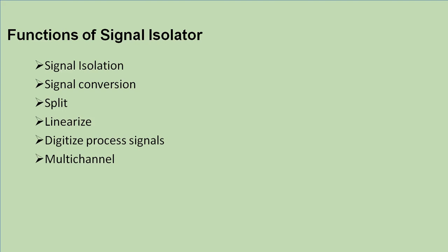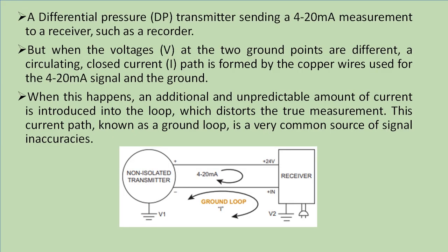Consider a differential pressure transmitter sending a 4-20 milliampere measurement signal to a receiver such as a recorder or analog input module.